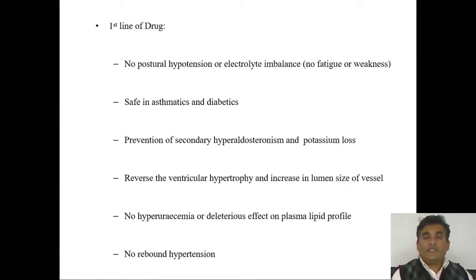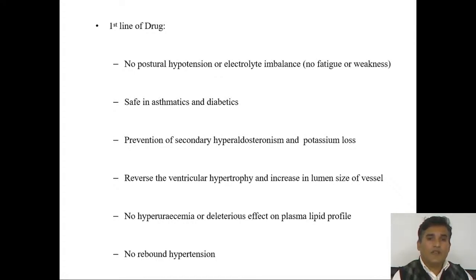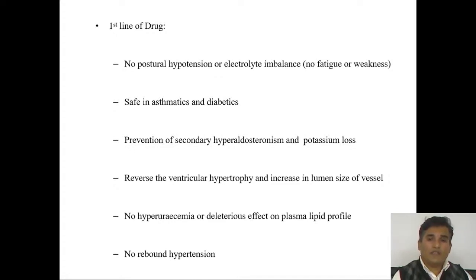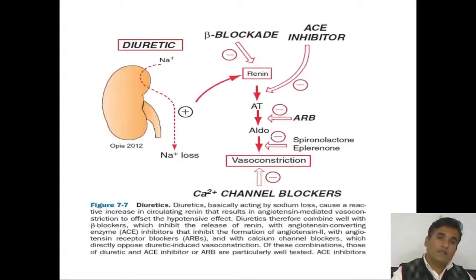ACE inhibitors are the first-line drug; they do not produce postural hypotension or electrolyte imbalance. They prevent secondary hyperaldosteronism or potassium loss, and reverse vascular and ventricular hypertrophy. They are the only drugs that can inhibit proliferation of the myocardium. No hyperuricemia or adverse plasma lipid profile changes are seen, and no rebound hypertension occurs.